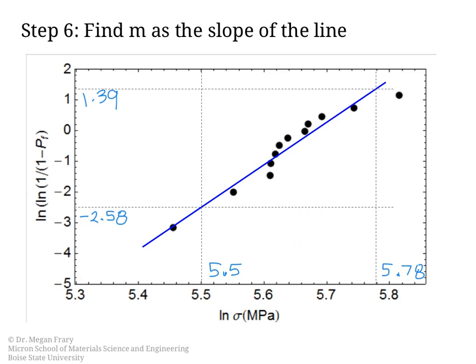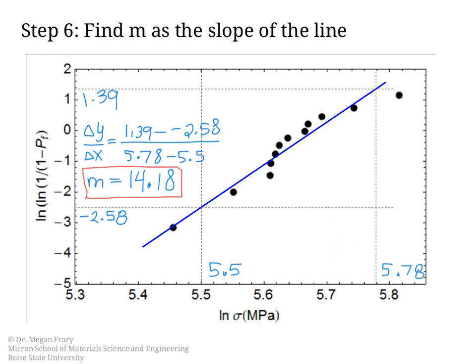Okay, so then we can find that delta y over delta x. In doing this, we find a value for M, as both the slope of this line and the Weibull modulus, of 14.18.